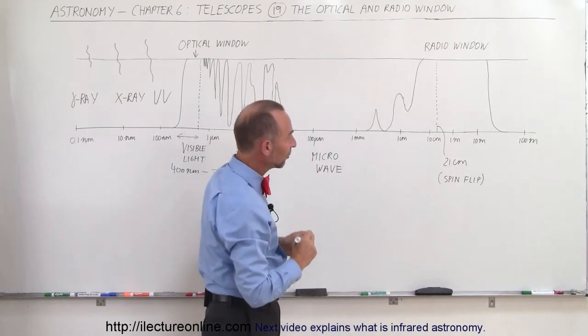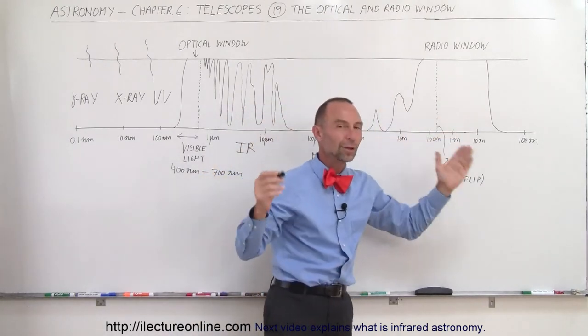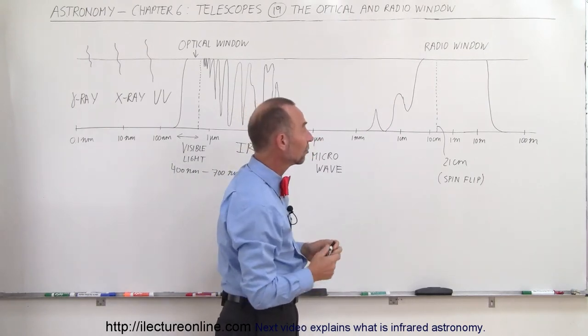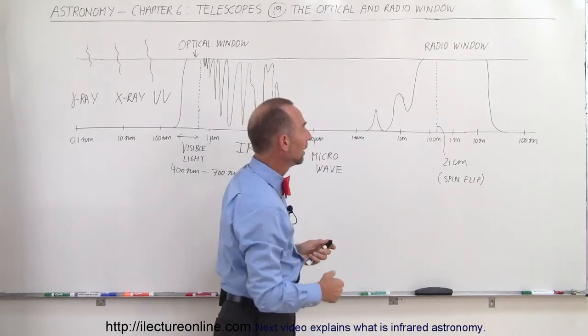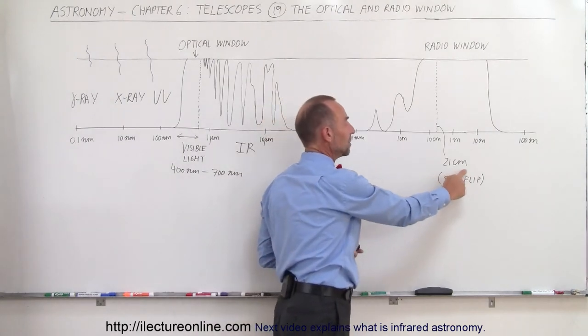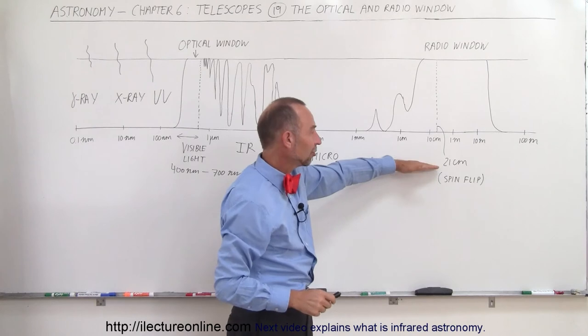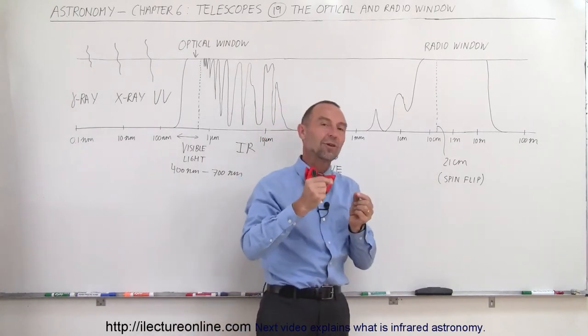And finally, we get to radio radiation. Again, we have a nice, beautiful open window where we can receive and see a lot of radio radiation. So we call that the radio window. In particular, the 21-centimeter wave is a very important one to us. That is caused by the spin flip of the electrons in hydrogen, in neutral hydrogen.